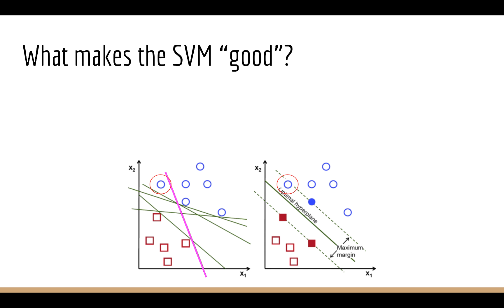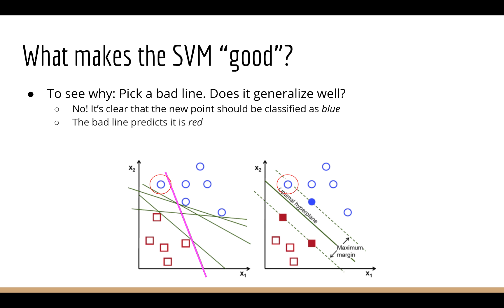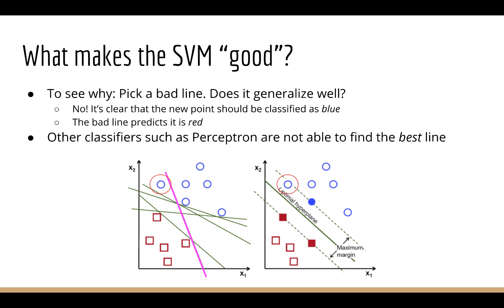Imagine if I pick this bad, rotated line. Now let me add a new data point. You can see that this new data point pretty clearly belongs on the blue side. If you had to make a prediction for this new data point, your intuition tells you that it should probably be classified as blue. Yet this line makes the wrong prediction. So one reason that the SVM is a good classifier is because it actually tries to find this line in the middle. Other linear classifiers, such as the perceptron, might not.